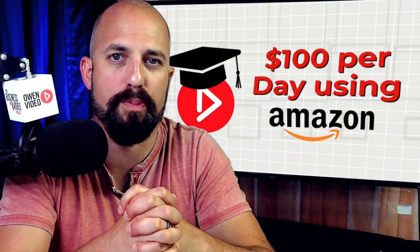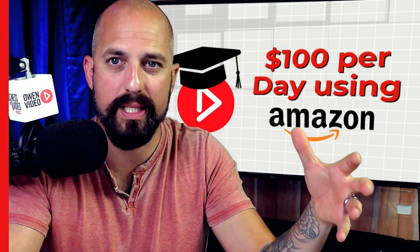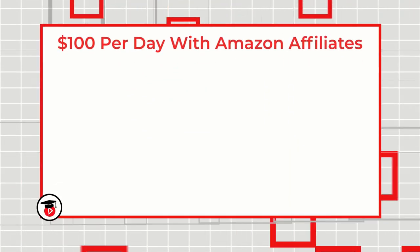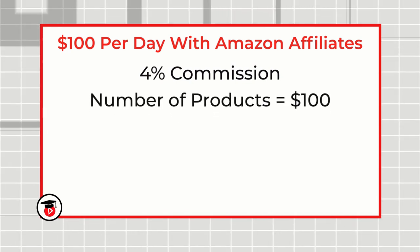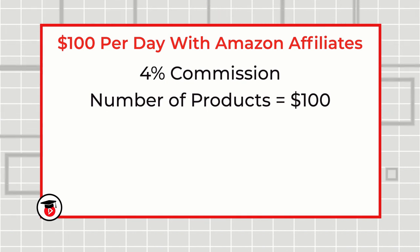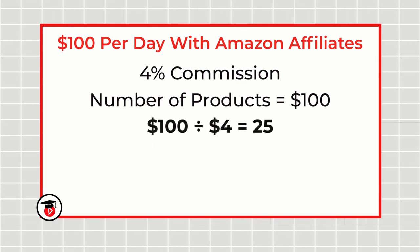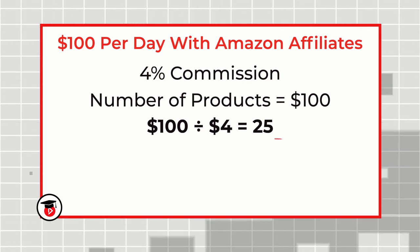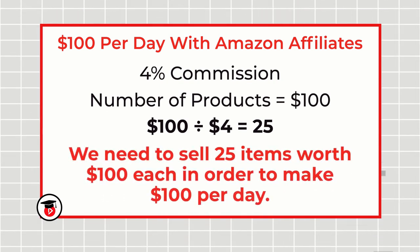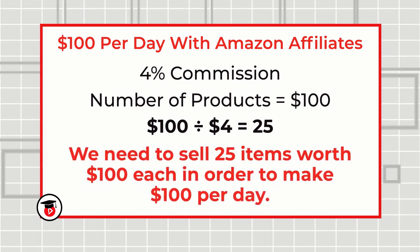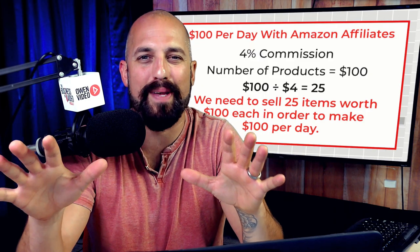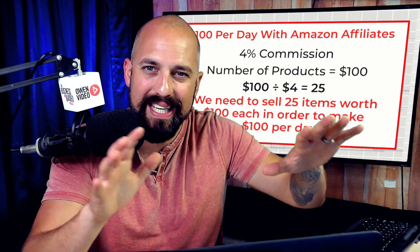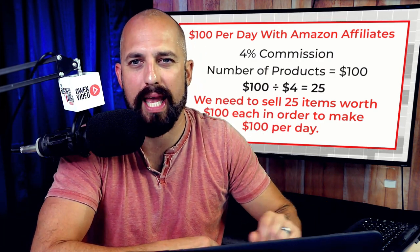So how do you make $100 per day? Well it comes down to that blueprint equation. At four percent commission, you're gonna need to find out how many products you need to sell in order to equal $100 per day. So what we do is we take $100 and we divide it by four dollars, which gives us the number 25 — which tells us that we've got to sell 25 $100 items at four percent commission in order to make $100 per day on Amazon. That's a little overwhelming at first, so I'm gonna show you an even easier way to make $100 per day using Amazon affiliates.